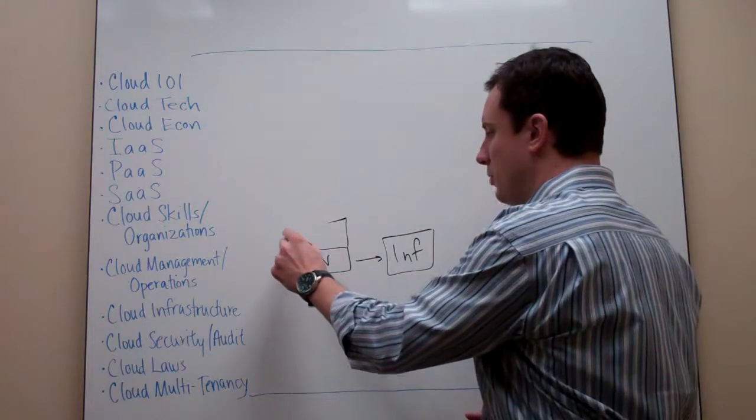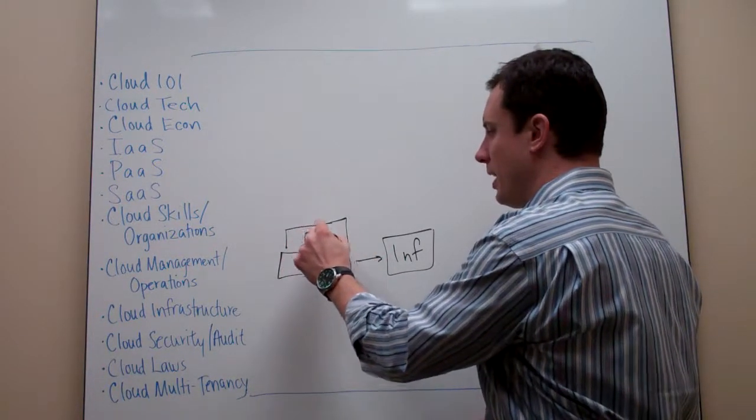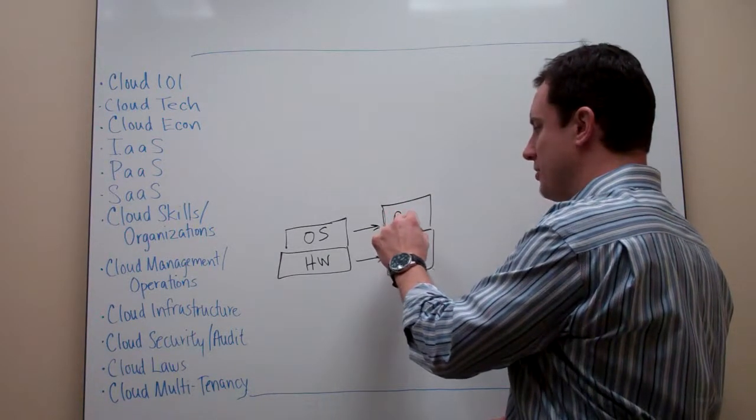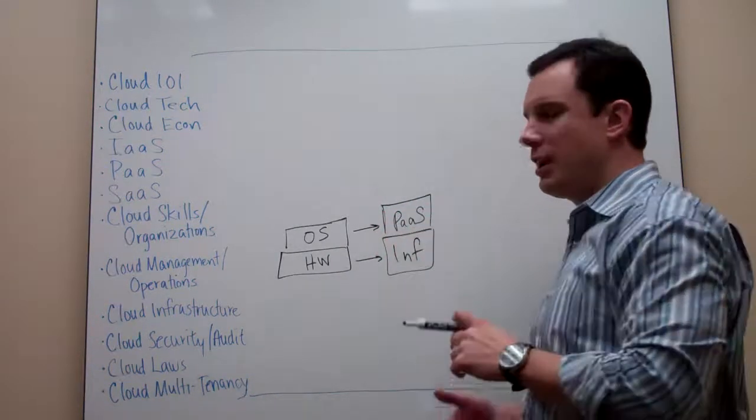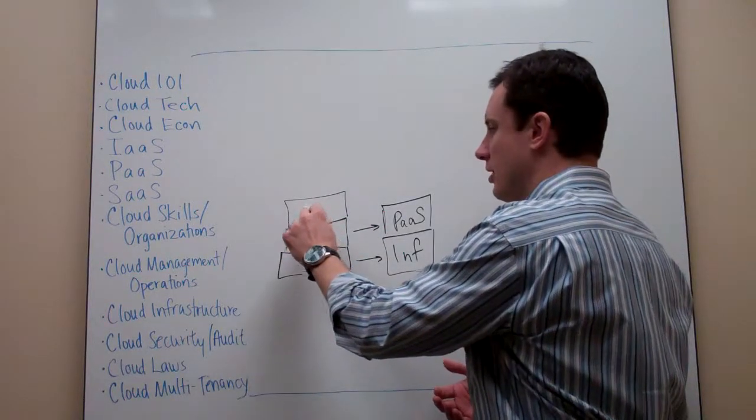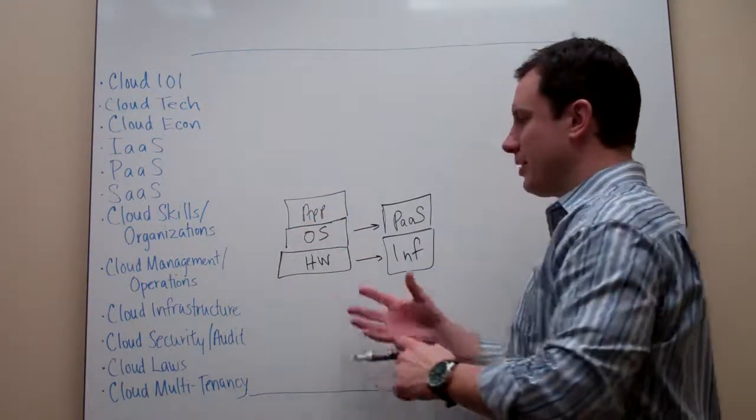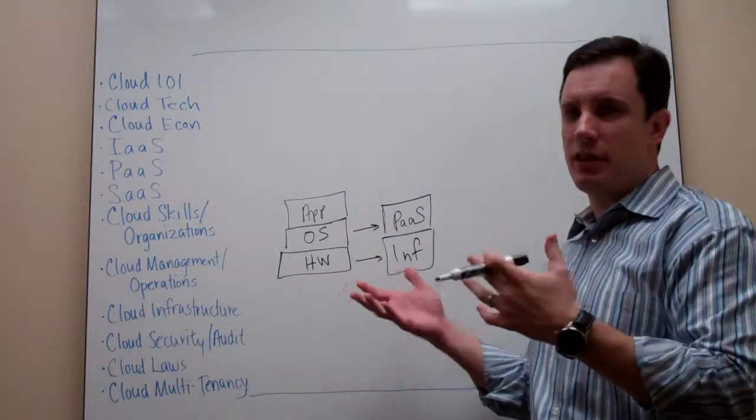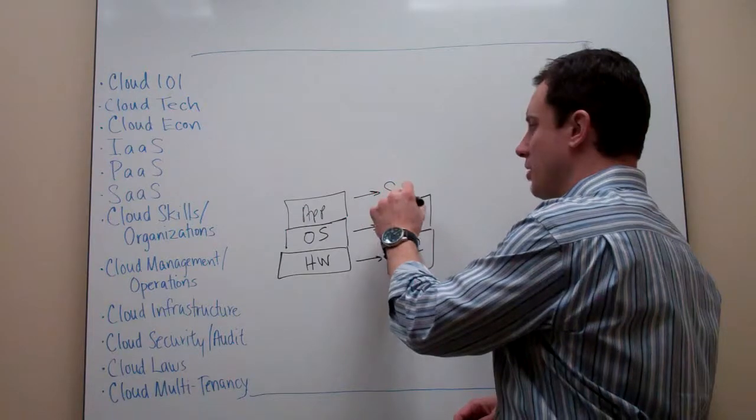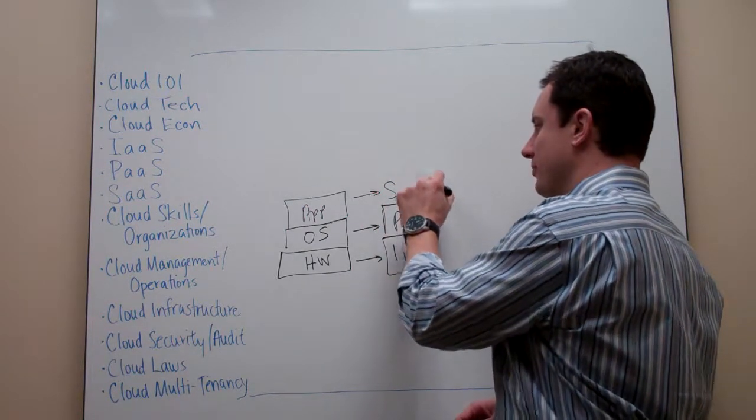And then we had the operating system, the OS, which really relates to what we're going to talk about now, which is PaaS, or Platform as a Service. And then on top of both of these, we have applications. In the case of a computing device or server, it's an application. In this other model, we tend to call that Software as a Service, or SaaS.